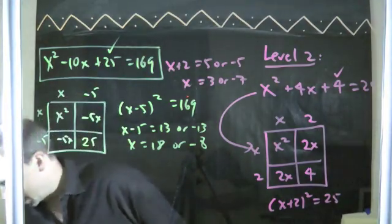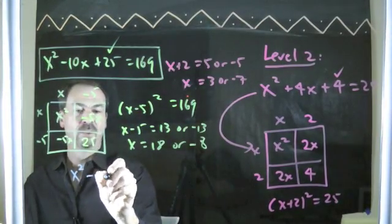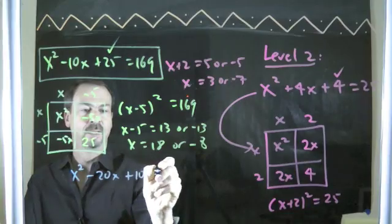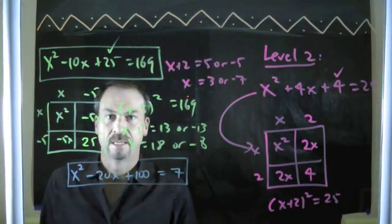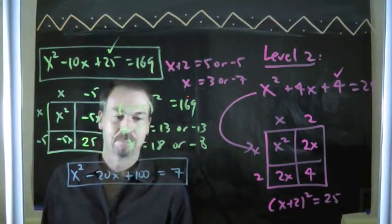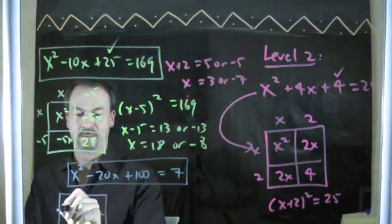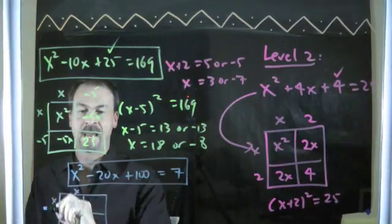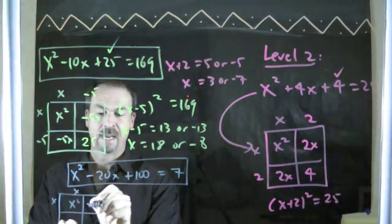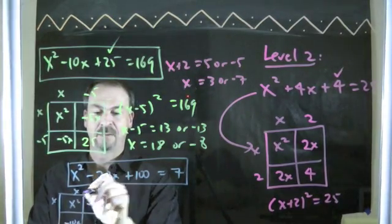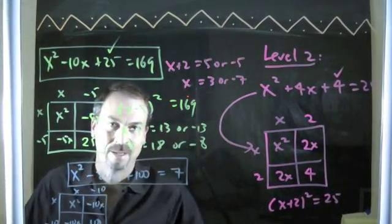Let's do another example. How about x squared minus 20x plus 100 equals 7. Is this really a level 1 problem in disguise? Let's find out. Let's draw the square. I'm worried about my board technique running out of room. x squared must come from x and x. Two pieces of the same that make negative 20x. Negative 10x. Negative 10x. Must be negative 10 inches. Negative 10 inches. Making negative 10 times negative 10 is 100.